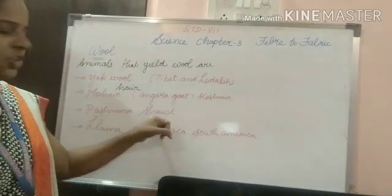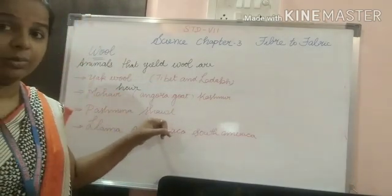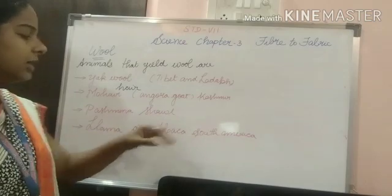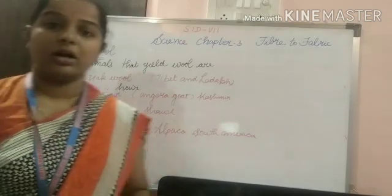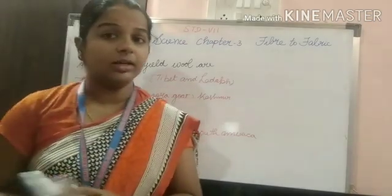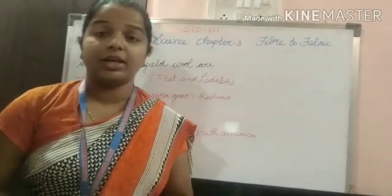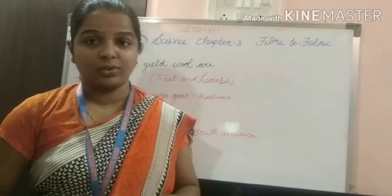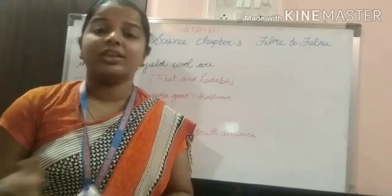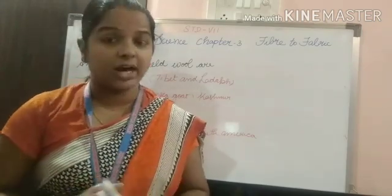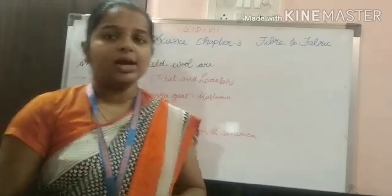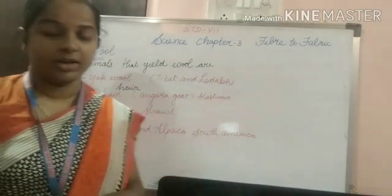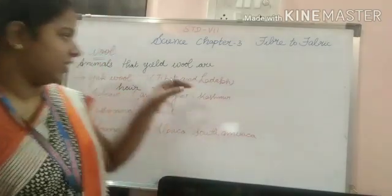The hair of the Angora goat is called mohair. For making pashmina shawls, they use that wool. Llama and alpaca are other animals that give us wool. Mostly we take wool from sheep, but these are special types of goats as well.